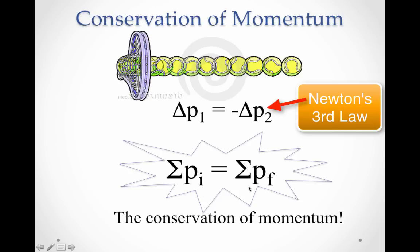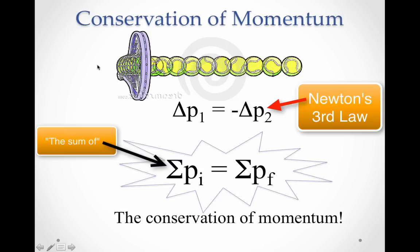That led to another idea. This is the Greek letter sigma — it stands for a sum of, in this case, the sum of the momentum initially. So this means the sum of the initial momentum of the system. We have two objects in our system: the tennis racket and the tennis ball. The tennis racket had momentum coming in, but the tennis ball didn't, so the total sum of the momentum initially was the tennis racket only.